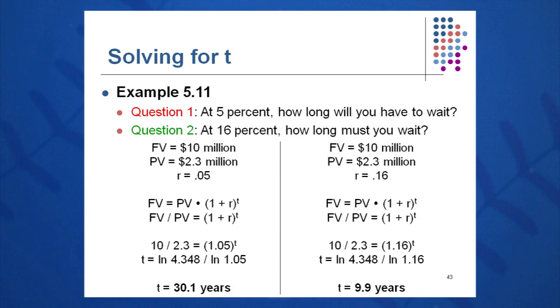In the first example, present value, in both examples, present value is $2.3 million. Future value is $10 million. And the only difference is the rate. So on the left, we have a rate of 5%. On the right, we have a rate of 16%. You can see that you must save up and leave the money in the bank for 30 years at 5% interest rate and only about 10 years at a 16% interest rate.